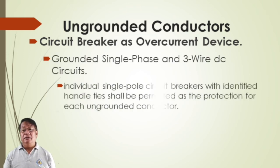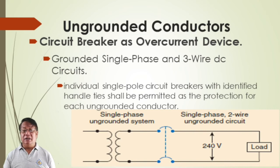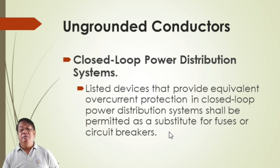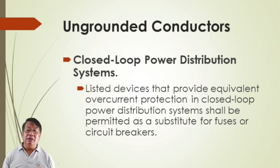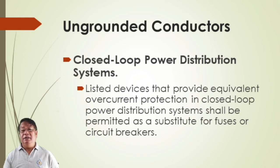For circuit breakers for grounded single-phase and three-phase circuits, individual single-pole circuit breakers with identified handle ties shall be permitted as protection for ungrounded conductors. Close loop power distribution systems using listed devices that provide equivalent overcurrent protection is permitted as a substitute for fuses or circuit breakers, ensuring continuous power supply in the system.